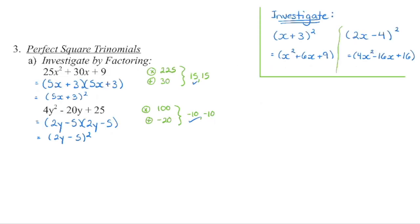Here's a trick: if we have x plus 3 squared and need to expand it, the first term is always squared — so x squared gets us x squared. The outside product always equals the inside product, so we double the product: 3 times x is 3x, doubled gives 6x. The last term is always that number times itself: 3 times 3 is 3 squared, which is 9. The quick way to expand a binomial squared: square the first term, double the product, square the last term.